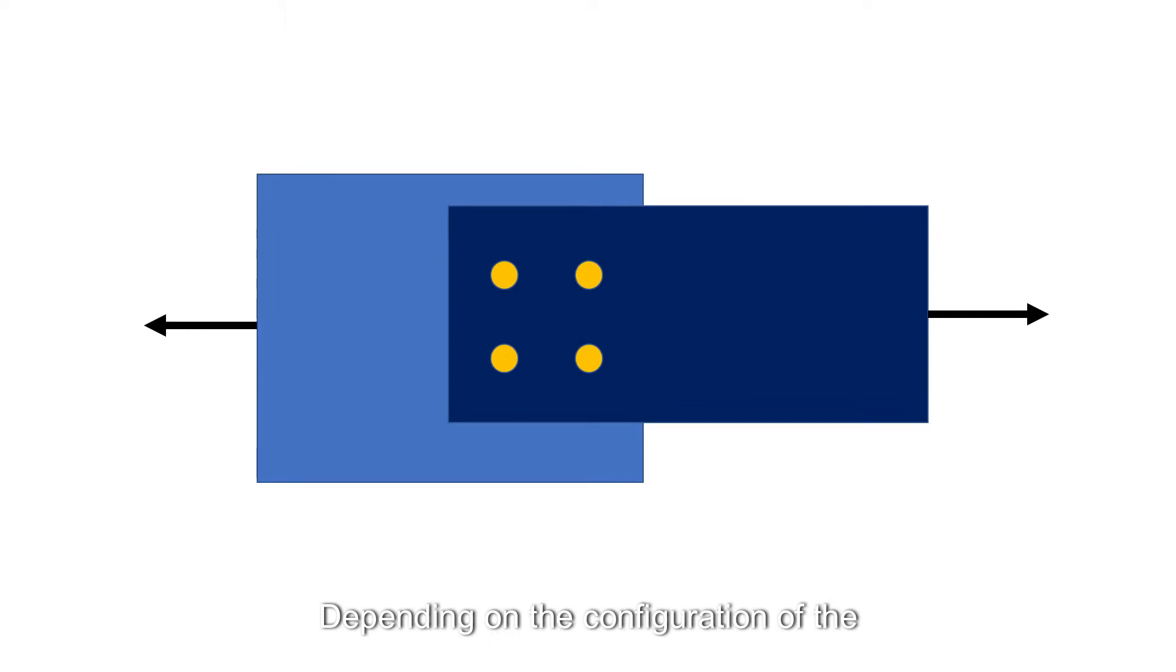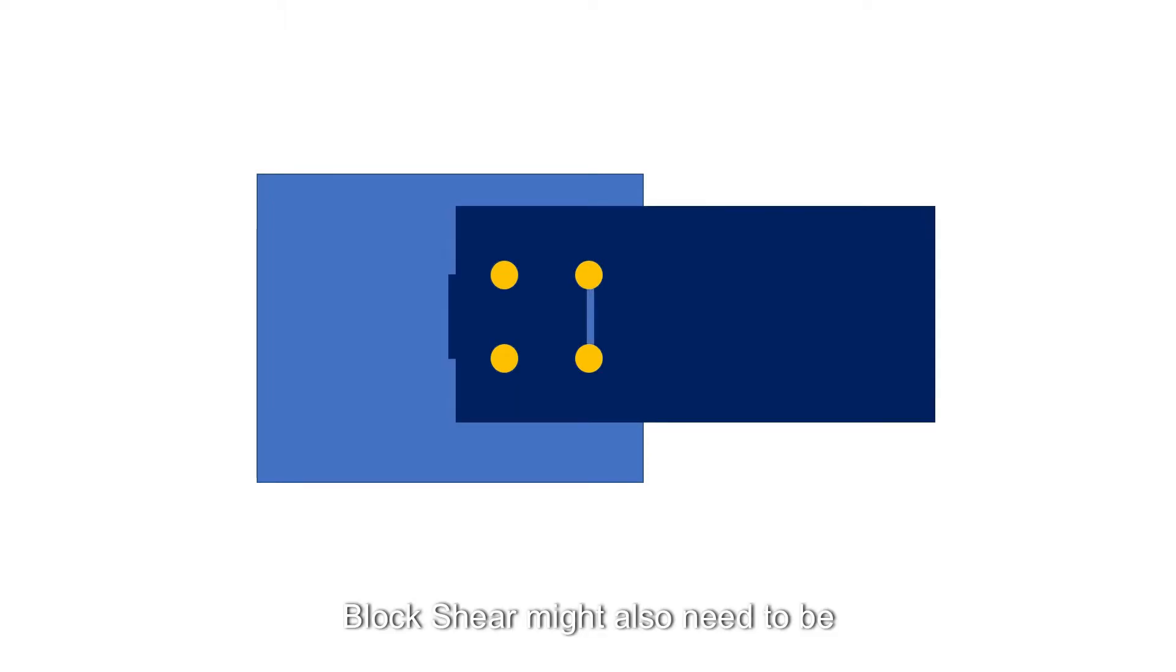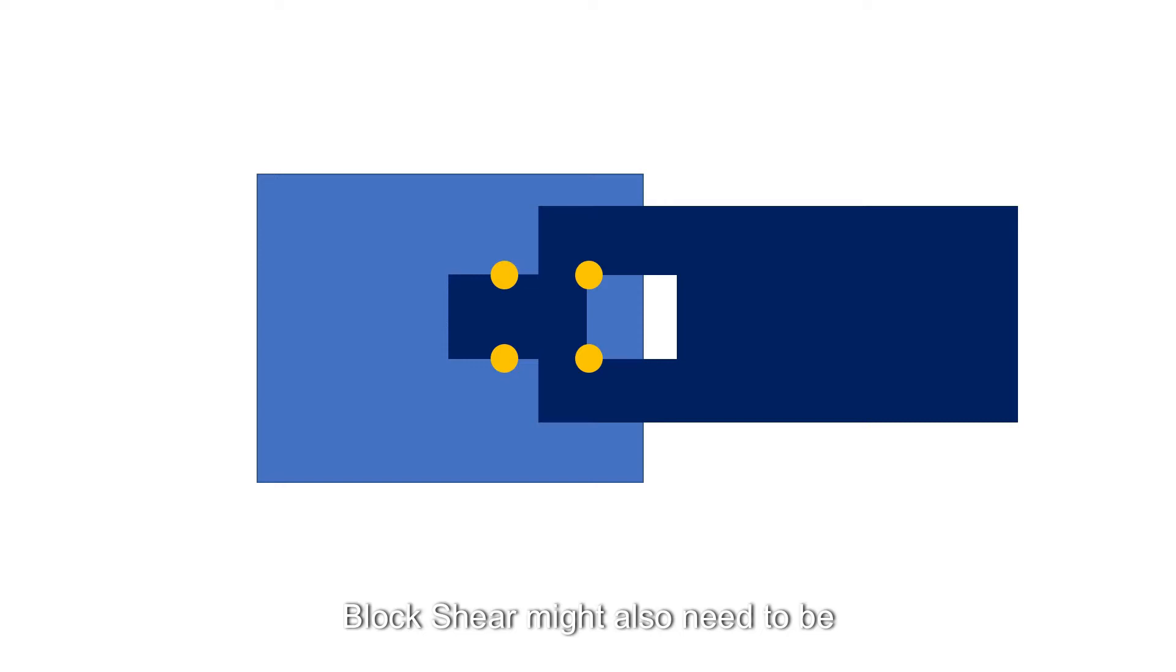Depending on the configuration of the connection, block shear might also need to be considered. The design of a tension member connection will usually be done in parallel with the design of the member itself because the two processes are interdependent.